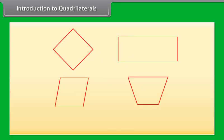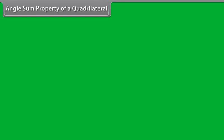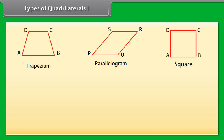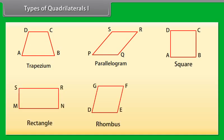These shapes are all quadrilaterals because they have four sides, four angles, and four vertices. There are different types of quadrilaterals: trapezium, parallelogram, square, rectangle, rhombus, and kite. We will go through them one by one.